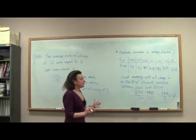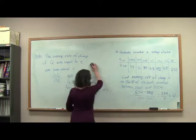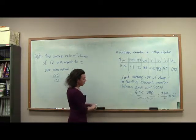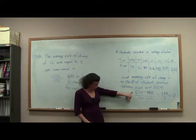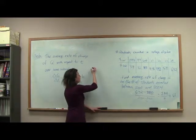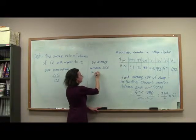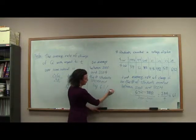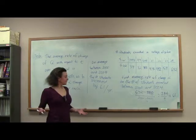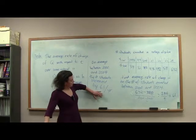But it's not the number that's really crucial — we need to be able to interpret what this means. Units are crucial. The numerator unit is number of students, and the denominator is year. So on average, between the year 2000 and 2004, the number of students increased by 61 per year. How do I know it increased? Because I got a positive number — the number of students went up, increased by 61 students per year.